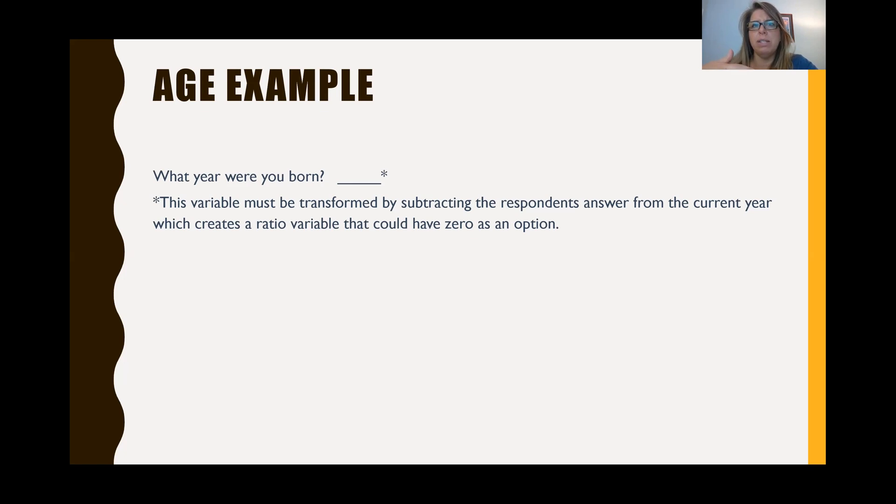Now, is it likely that someone who is zero years old would be answering this survey? No, it's not. But there still is a zero point in the scale, which makes it a ratio plus the equal intervals where there's a one year interval between each of the answers that someone could give.